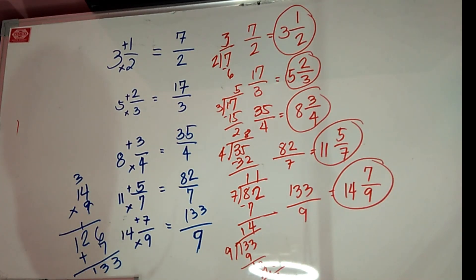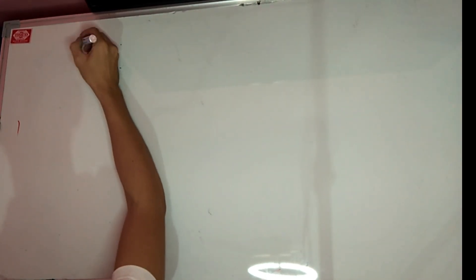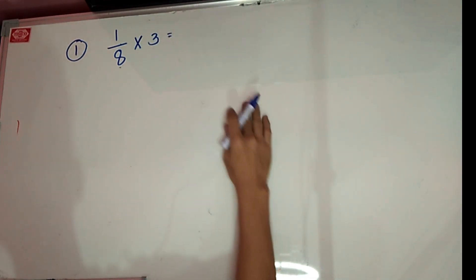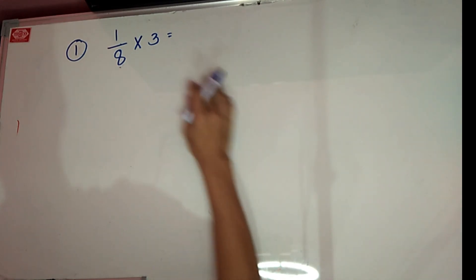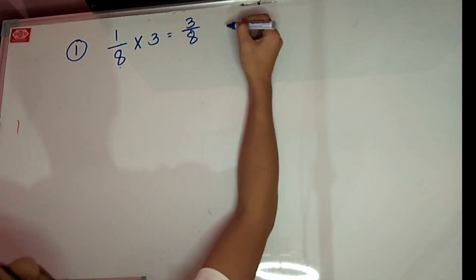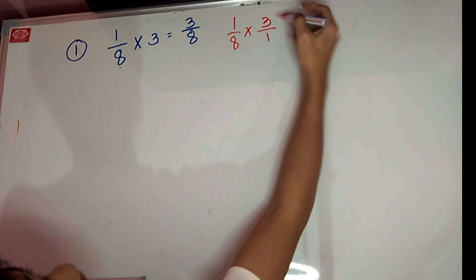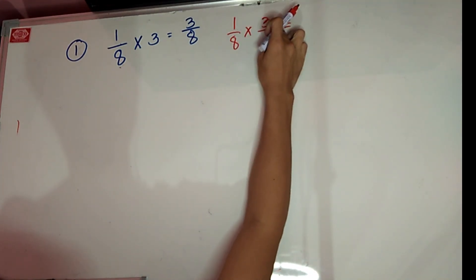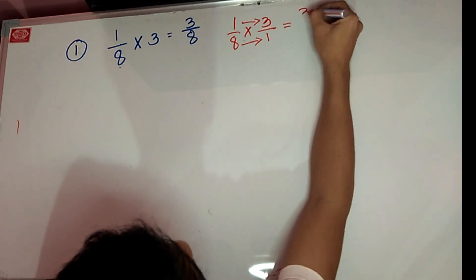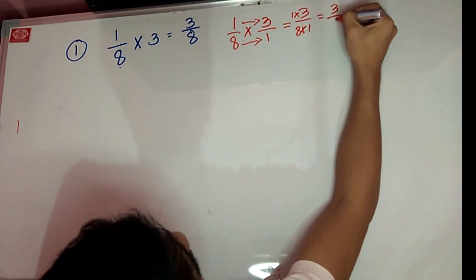Let's proceed now to multiplication of fractions. First example: we will have a fraction and a whole number. When you multiply this one, just simply multiply 3 to your numerator and copy the denominator. Or you can add 1 as the denominator to the whole number — so numerator times numerator, denominator times denominator. 1 times 3 is 3, 8 times 1 is 8. So the answer is 3 over 8.